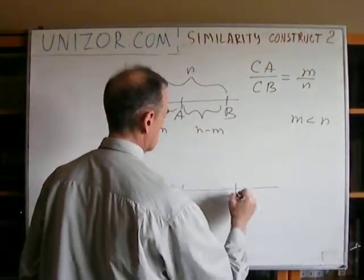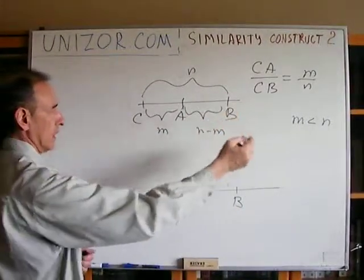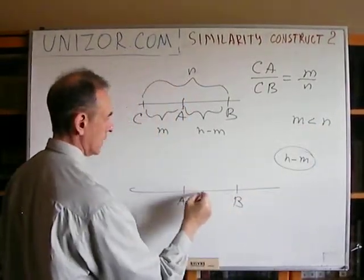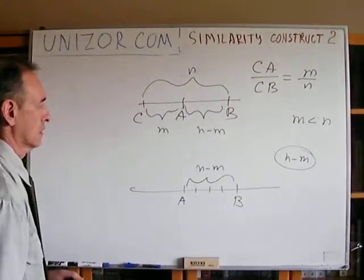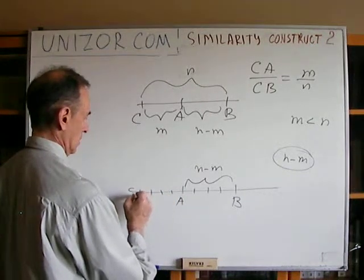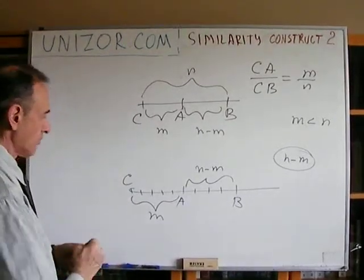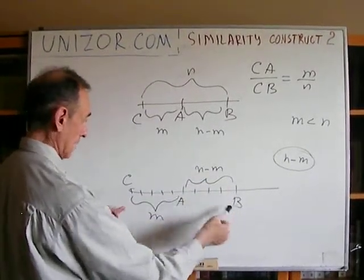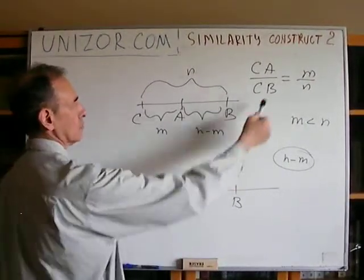If this is my AB, knowing M and N where N is greater than M, I divide AB into N minus M equal parts, and then going to the left I add M such parts, and that's my point C. The length of CB would be N plus (N minus M), which is N parts, and the length of CA would be M parts, so the ratio would be whatever I need.